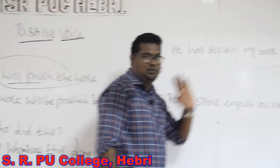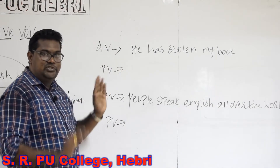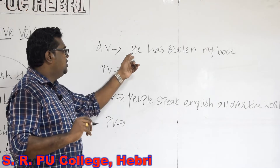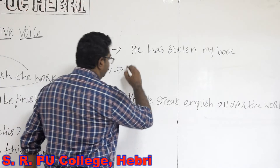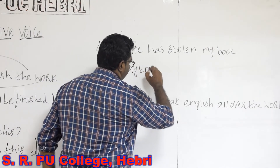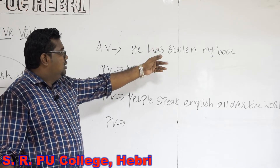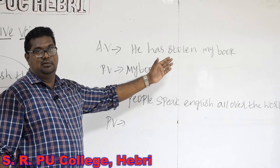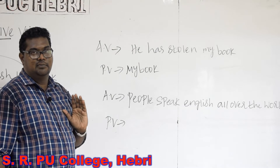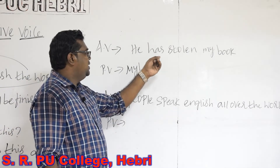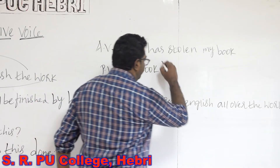Next sentence: He has stolen my book. Once again we are supposed to apply the same five rules — interchanging subject into object and object into subject. So when you do that, 'my book' becomes the subject. Next we need to identify the tense of the main verb. Here the main verb is 'has stolen' and the tense is present perfect tense. So 'has stolen' will become 'has been stolen'.